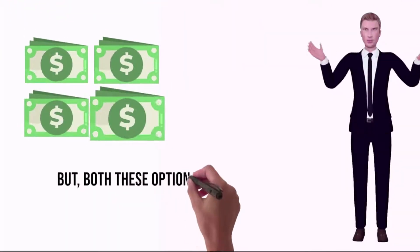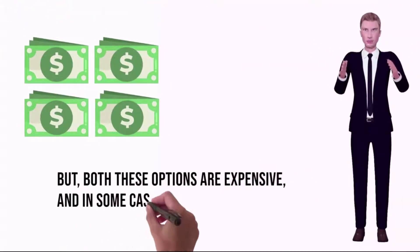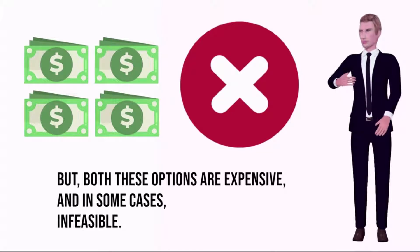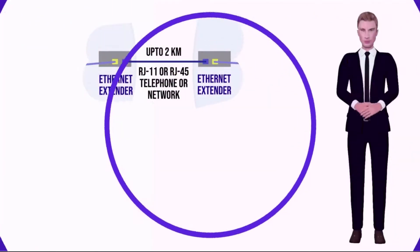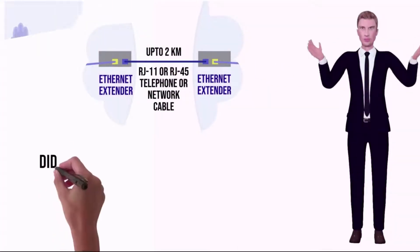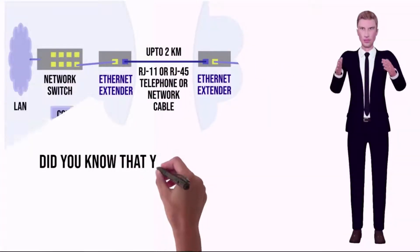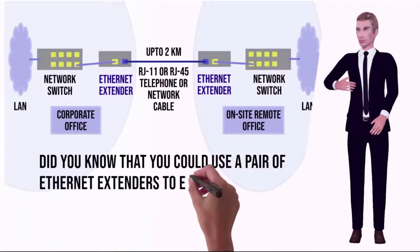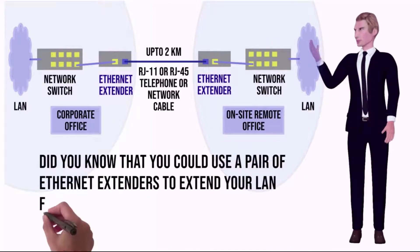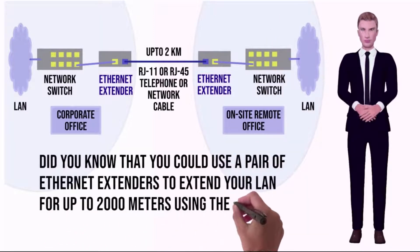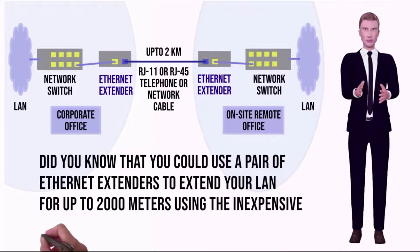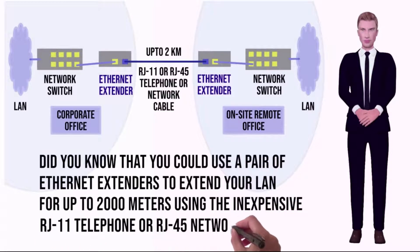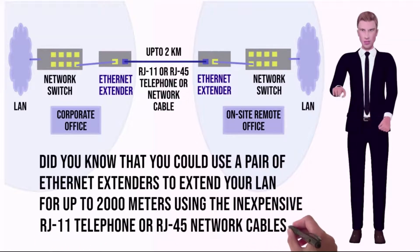Did you know that you could use a pair of Ethernet extenders to extend your local area network for up to 2,000 meters using the inexpensive RJ11 telephone or RJ45 network cables?